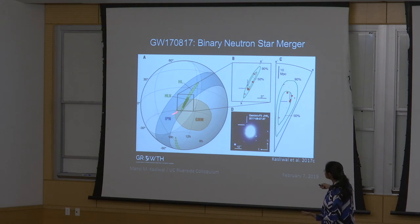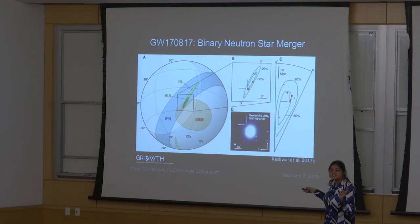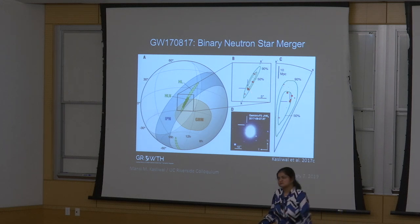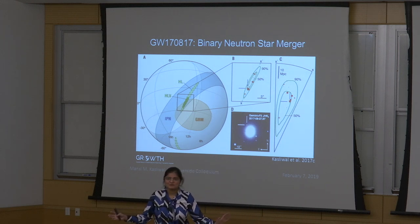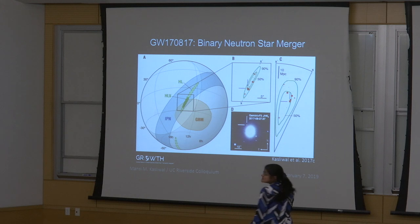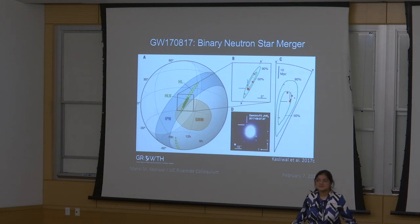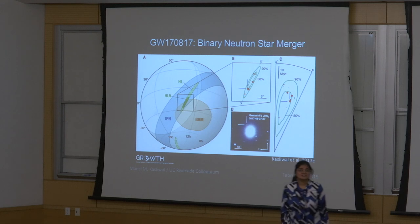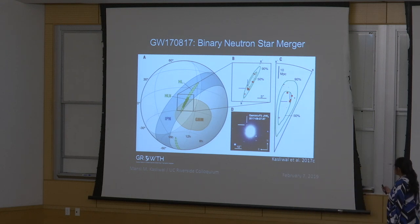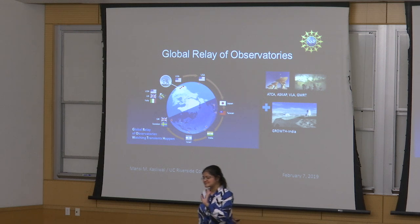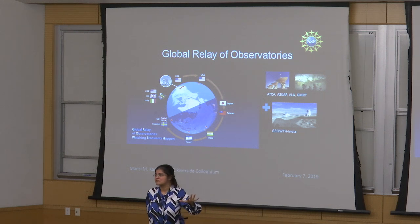Ranking those galaxies by mass — the more massive the galaxy, the more stars, the more likely it is to be the home of the merger — the third most massive galaxy in the list turned out to have a bright red dot not seen ever before, and this was in fact the electromagnetic counterpart to gravitational waves for the very first time. As soon as you know the location of the event, every telescope in the world starts to collect data of this flash of light before it fades away.